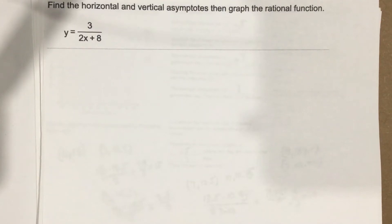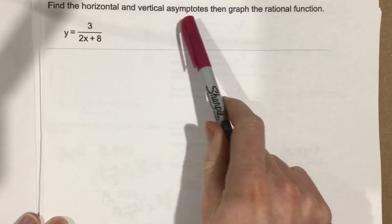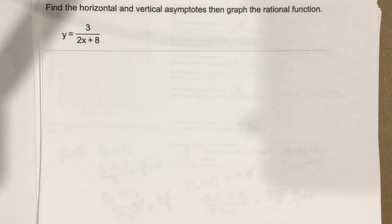This is problem number 7 for section 2.6. It says find the horizontal and vertical asymptotes, then graph the rational function. So let's start with the vertical asymptote.